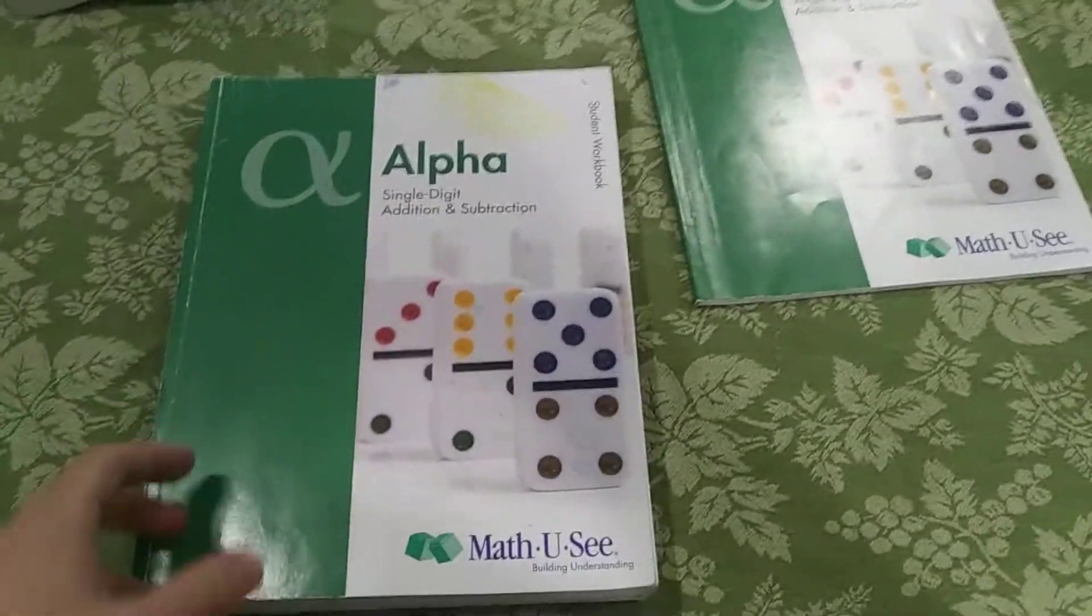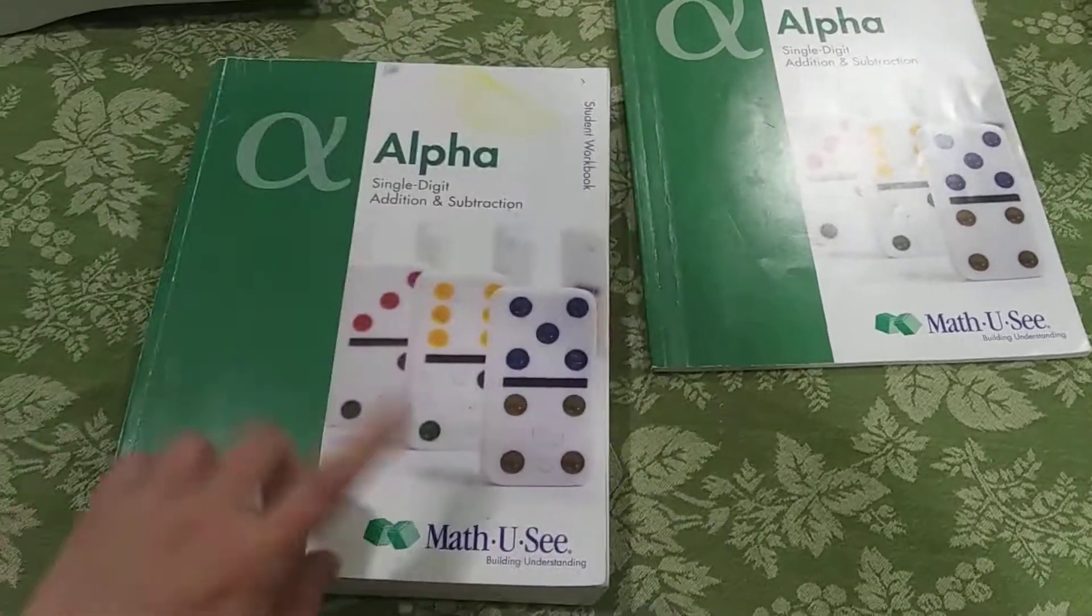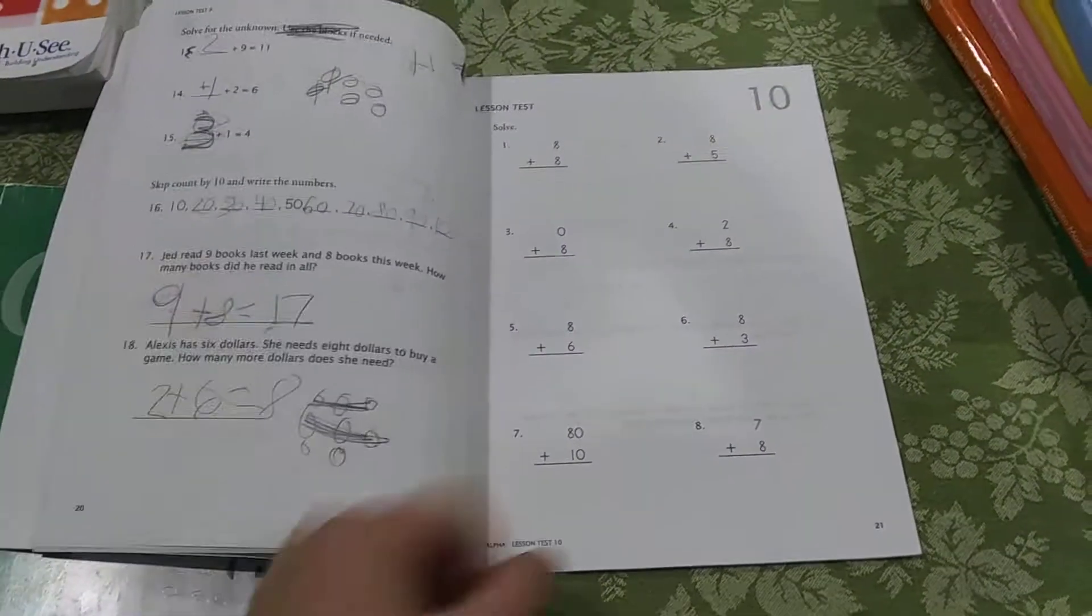When you get to Alpha, which you could use for grades one or two, wherever your child is, you get a workbook, you get a video, and you get this simple little test book. It goes like that. Quick, short, little test.